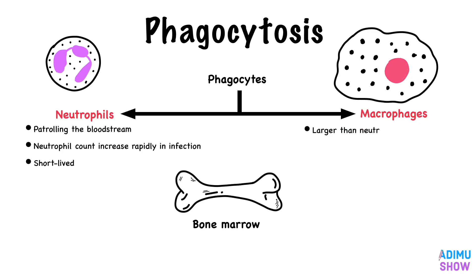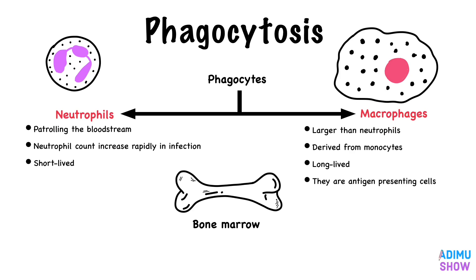Macrophages are larger than neutrophils. They are derived from monocytes and are found in the tissues rather than the bloodstream. They are long-lived cells, and they act as antigen-presenting cells by displaying antigens that can be recognized by lymphocytes.